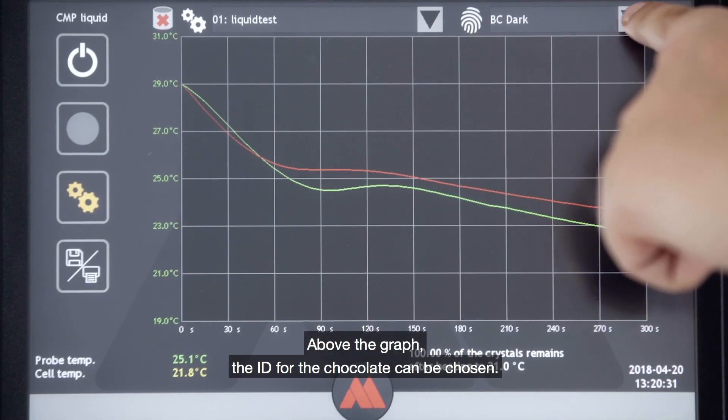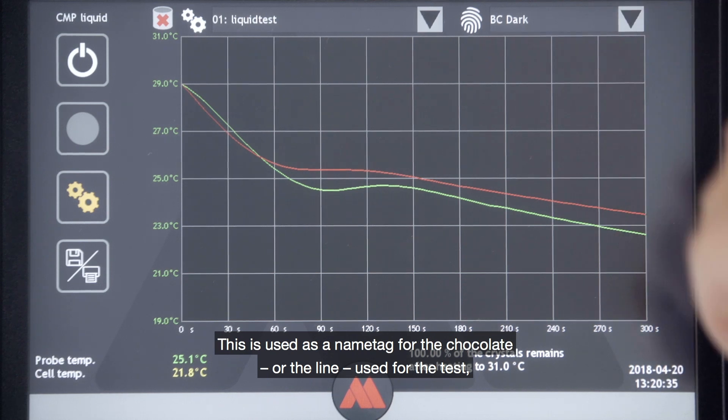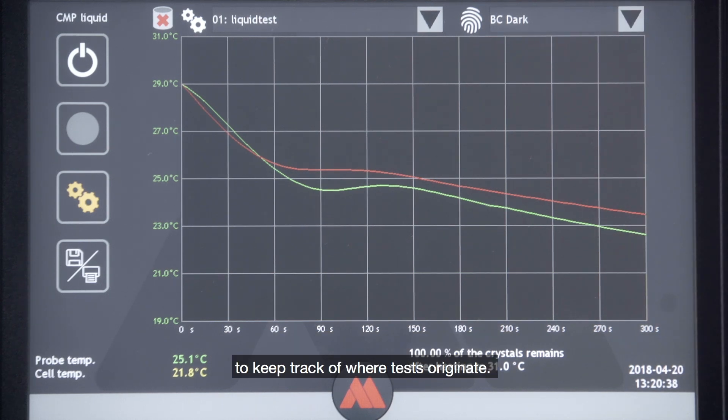Above the graph, the ID for the chocolate can be chosen. This is used as a name tag for the chocolate or the line used for the test to keep track of where the tests originate.